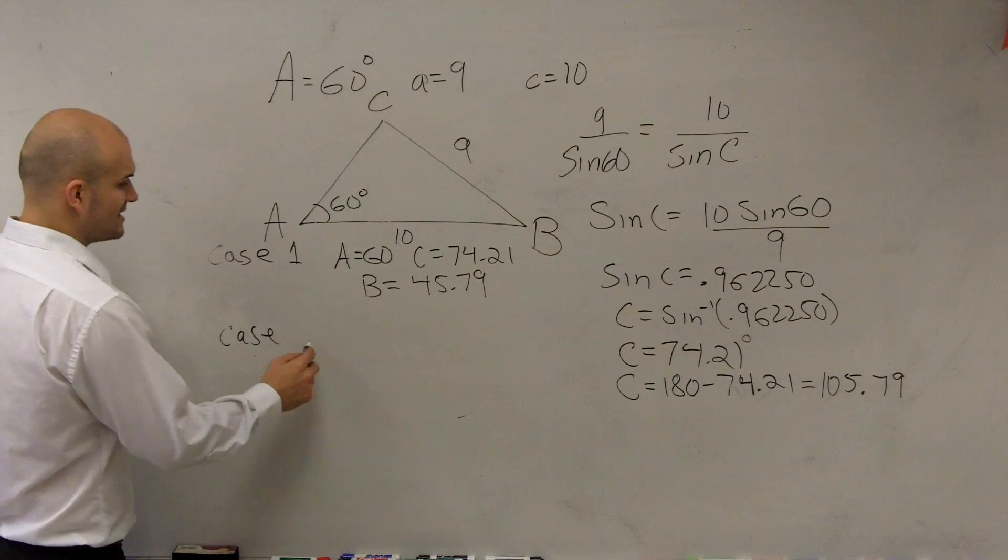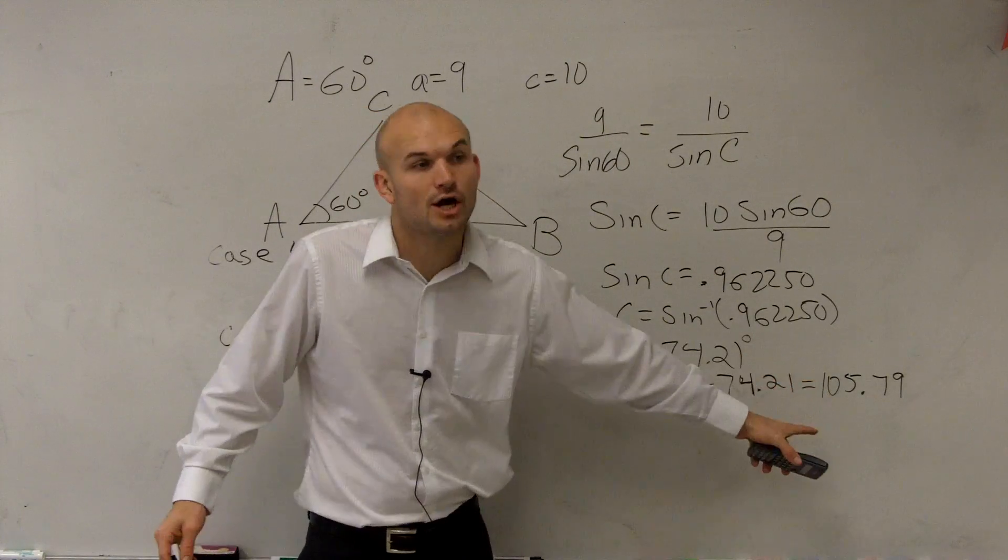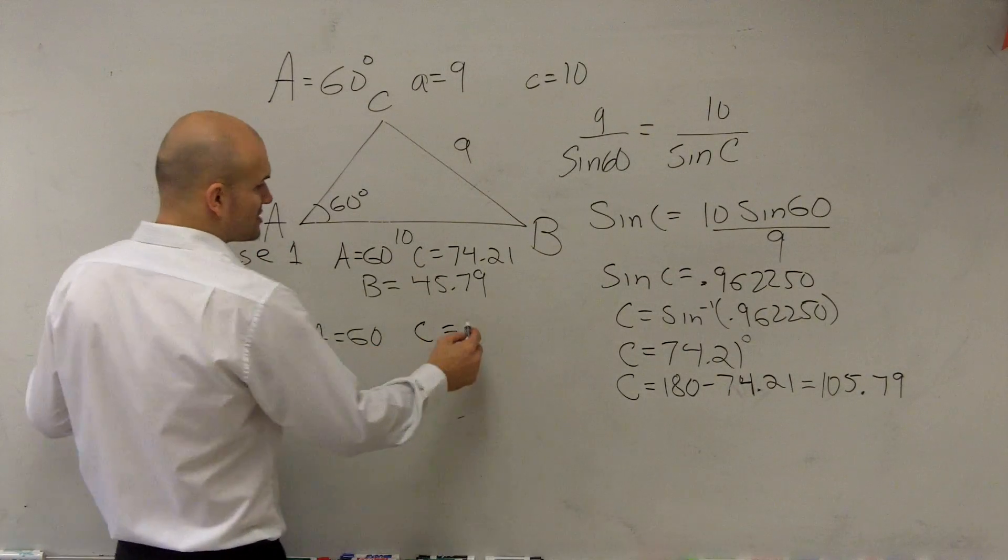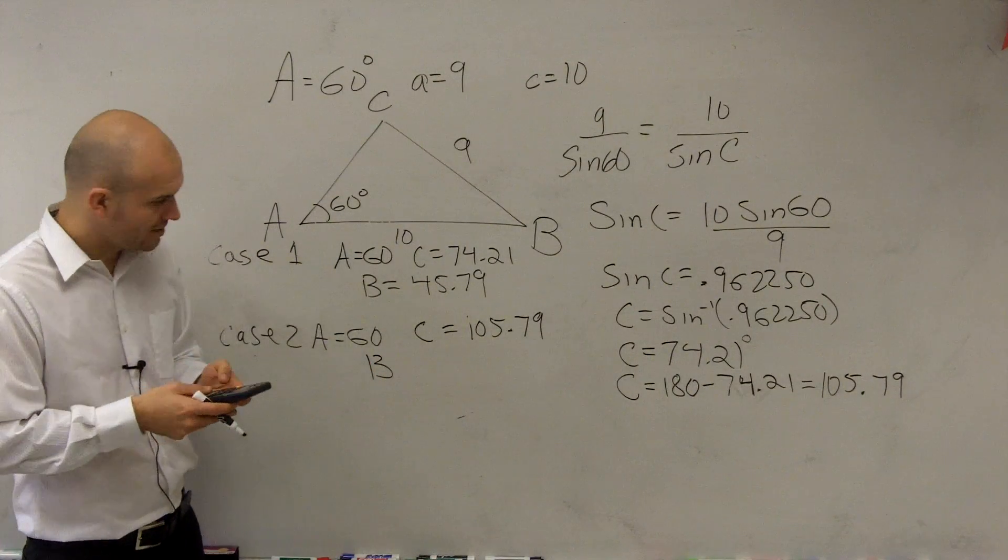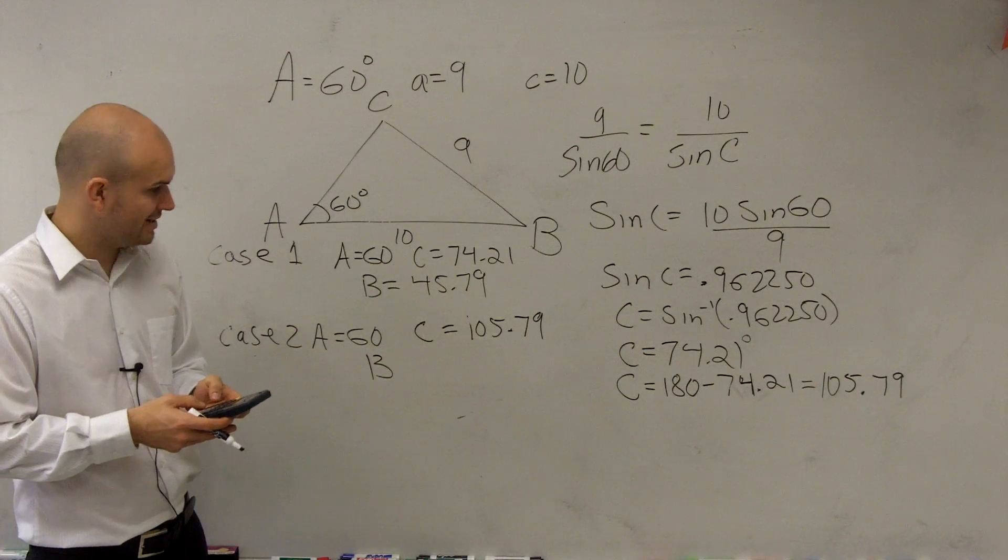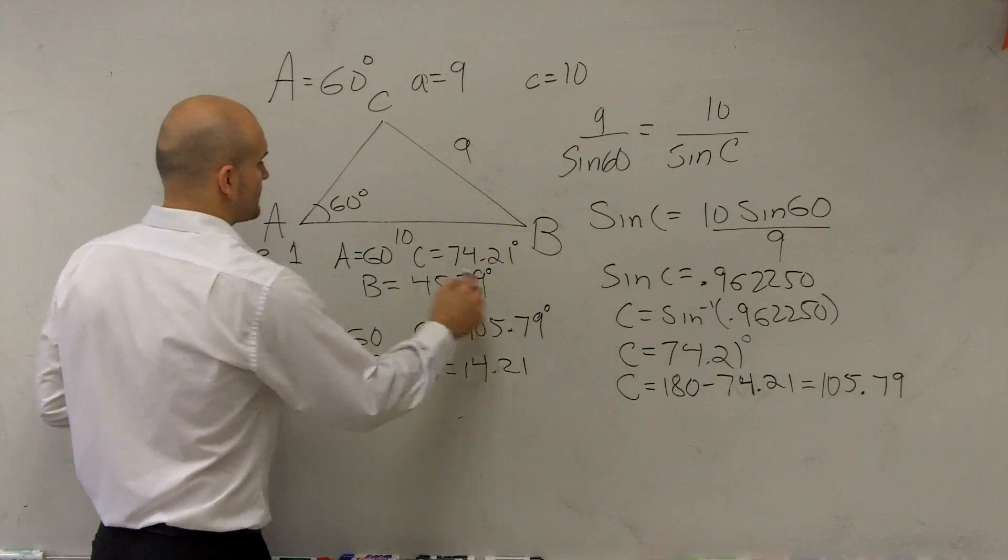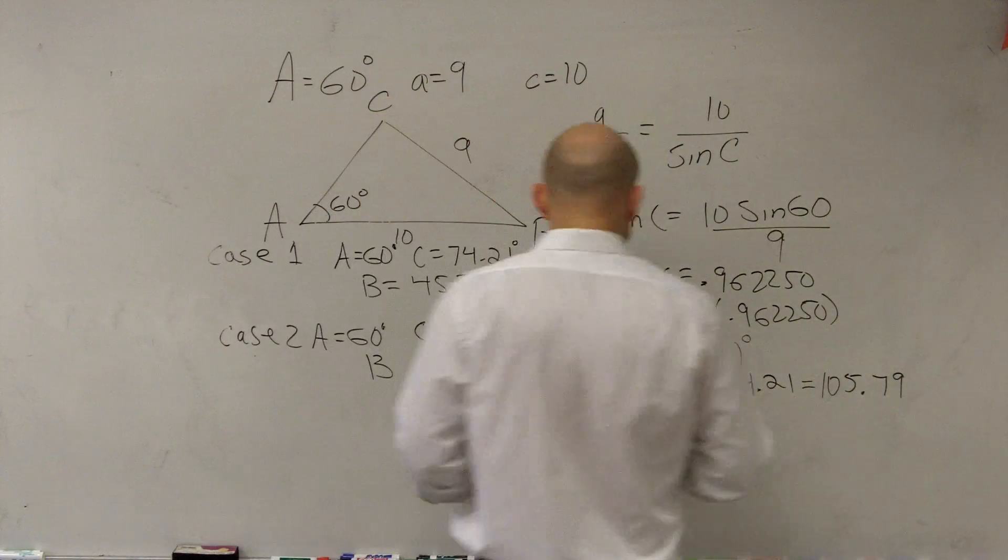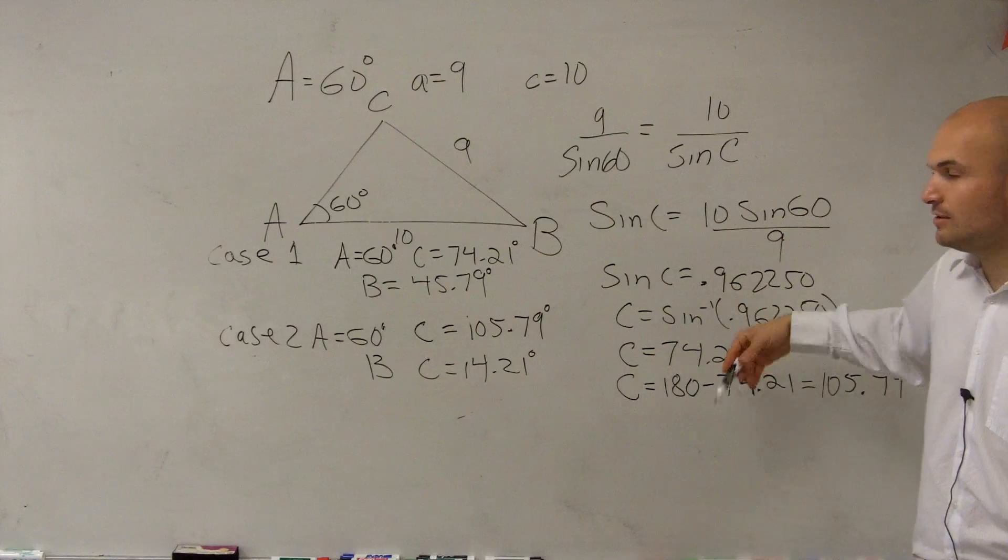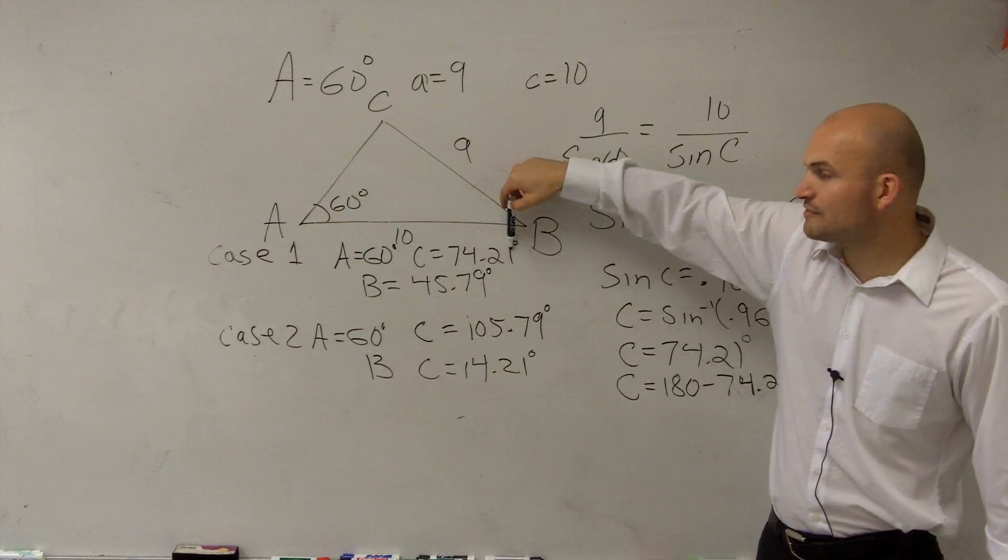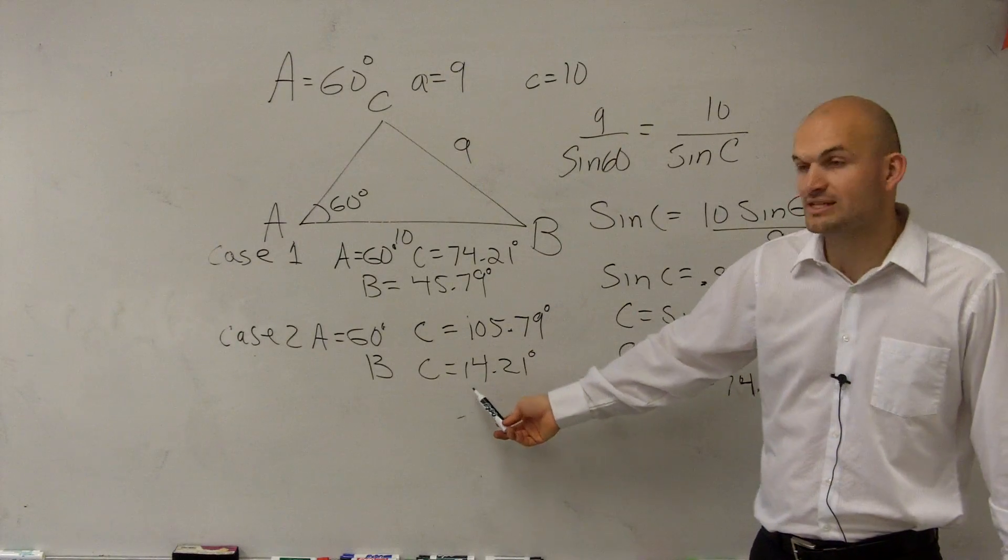If we did case number two, what we're saying for case number two, A still equals 60 degrees. But now I'm saying C, because remember, C could be 74 or it could be 105. It could be either one. So, let's say, what if C equals 105.79 degrees? Then, what would B equal? Well, let's see if this will work. So, I could do 180 minus 105.79 degrees minus 60. Therefore, in this case, C is going to equal 14.21. These are all degrees. So, first of all, the thing you guys need to understand is we can have multiple answers for C. Right? Because our sine is exactly the same.